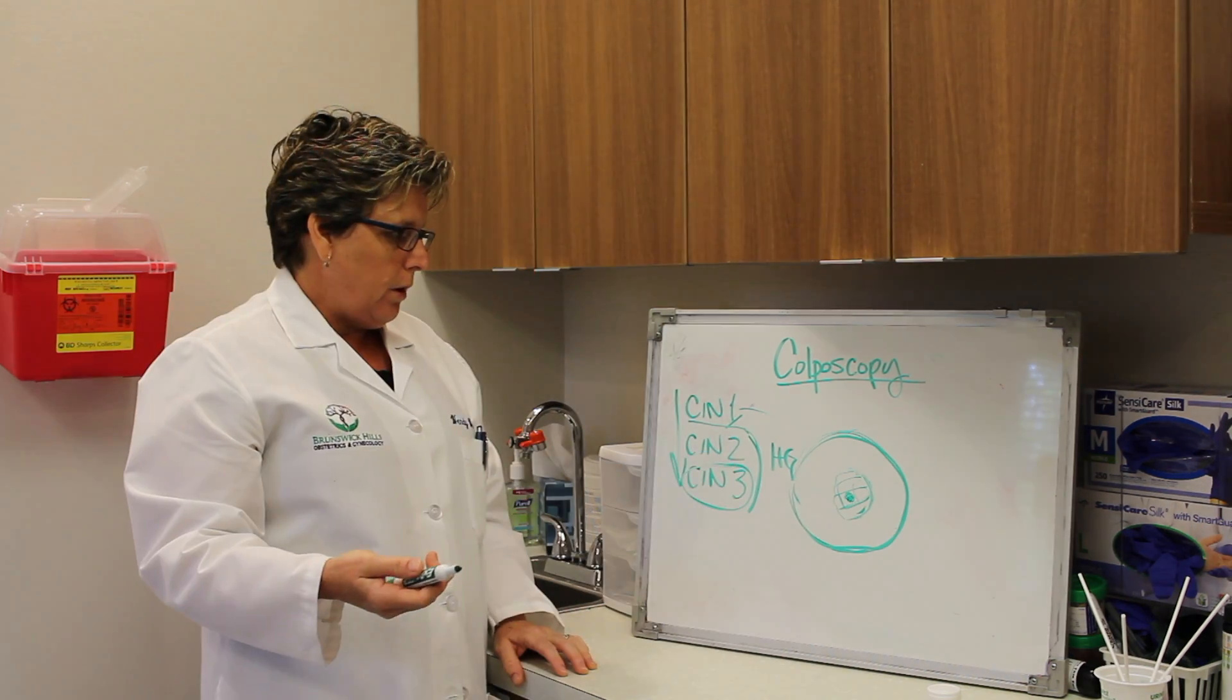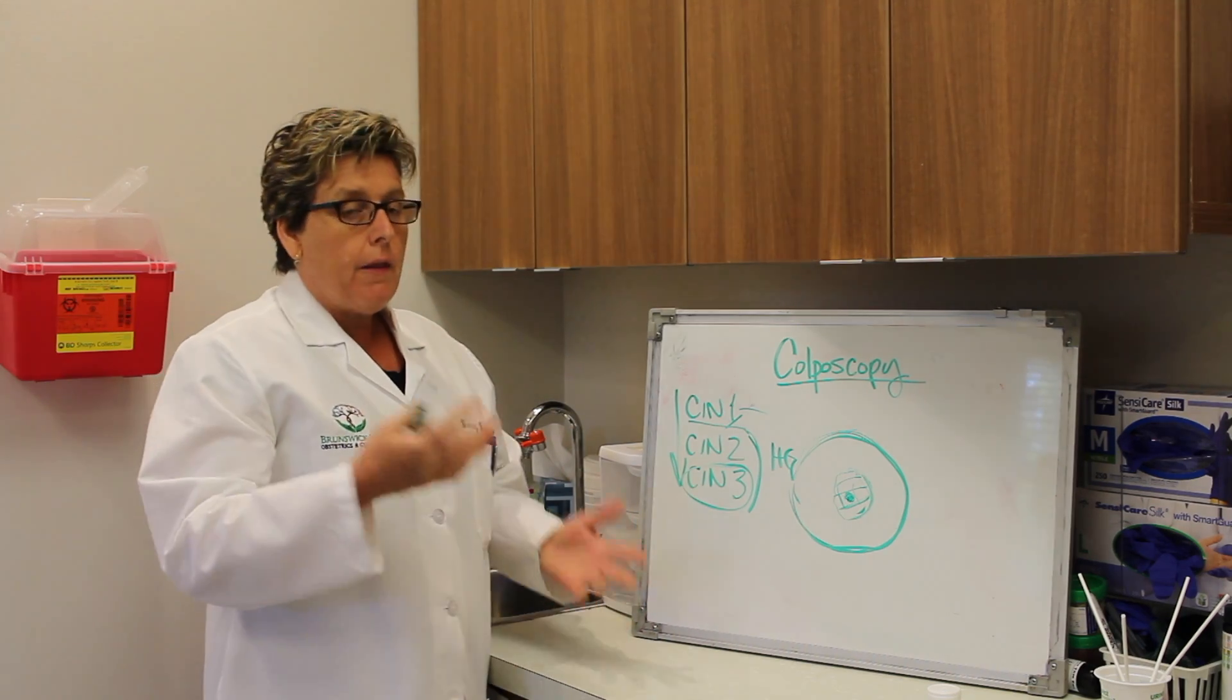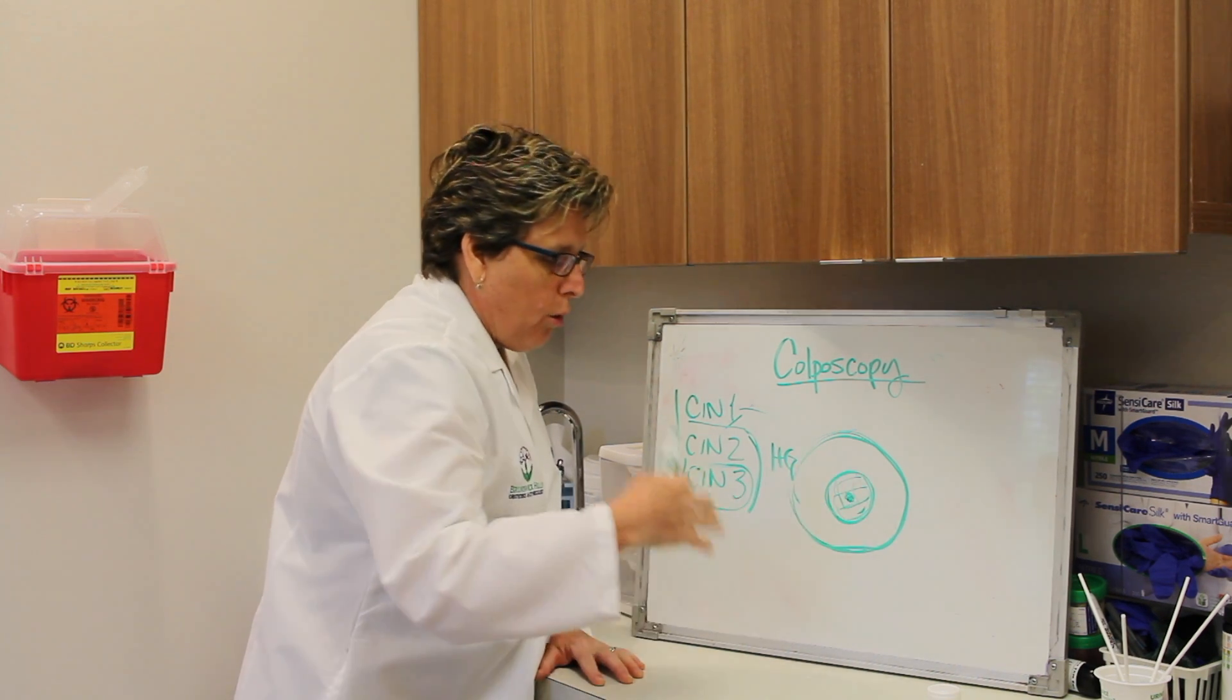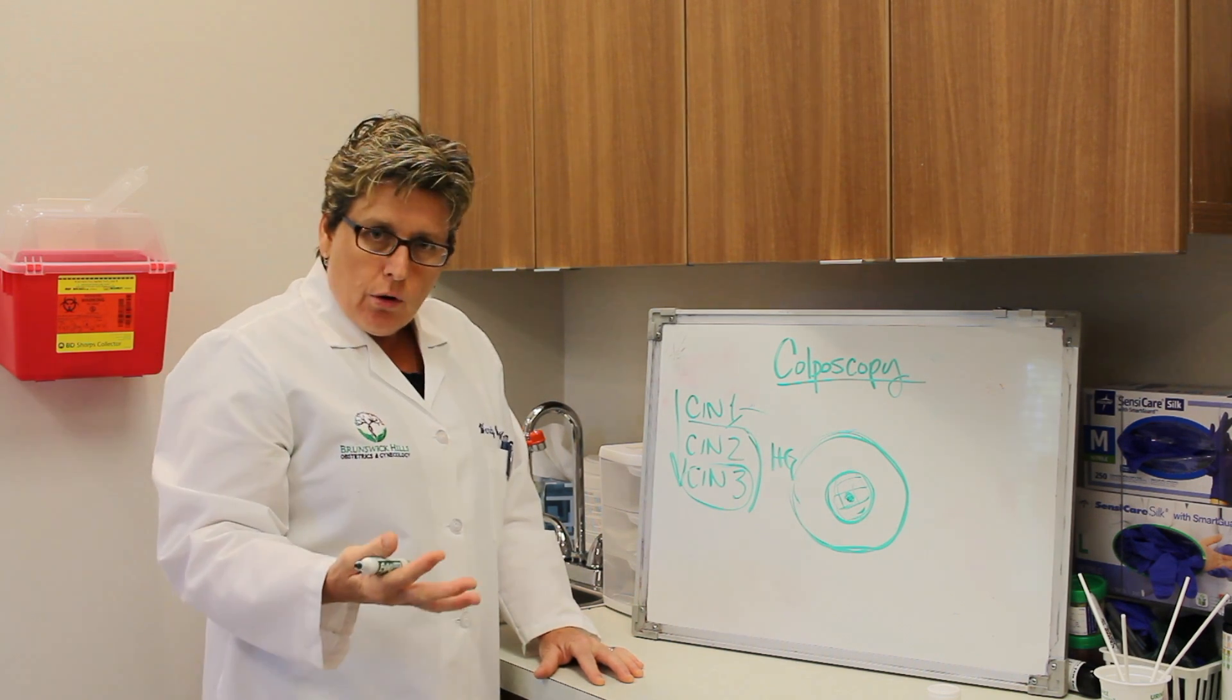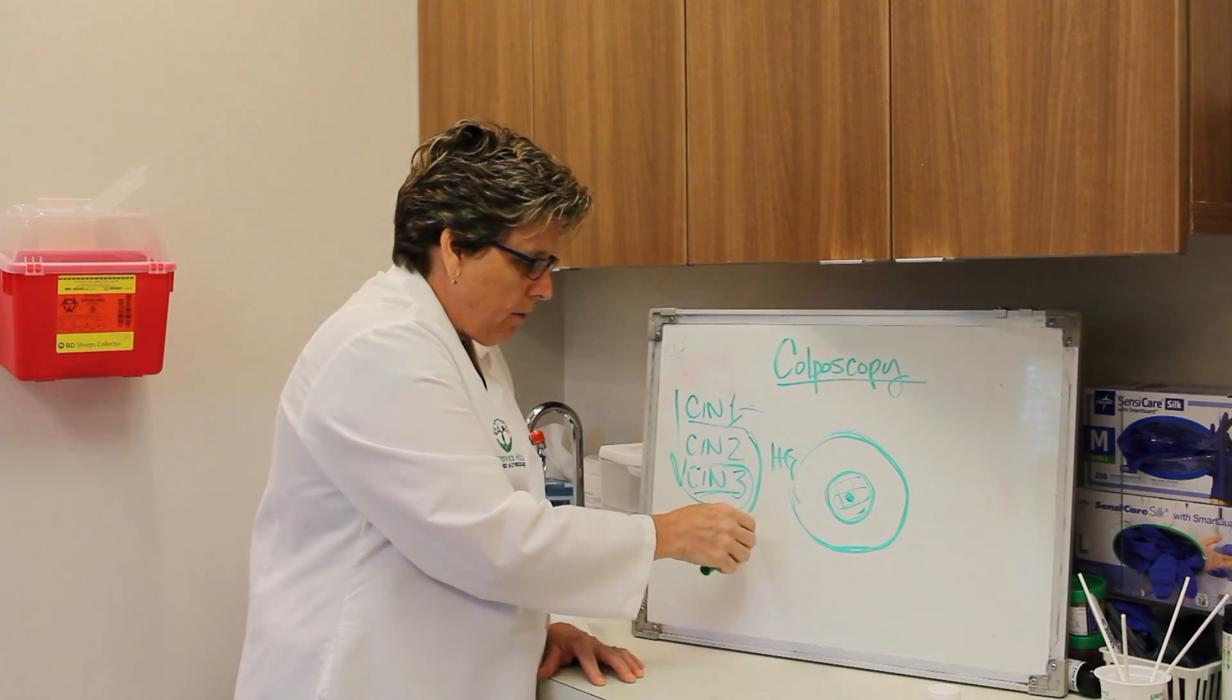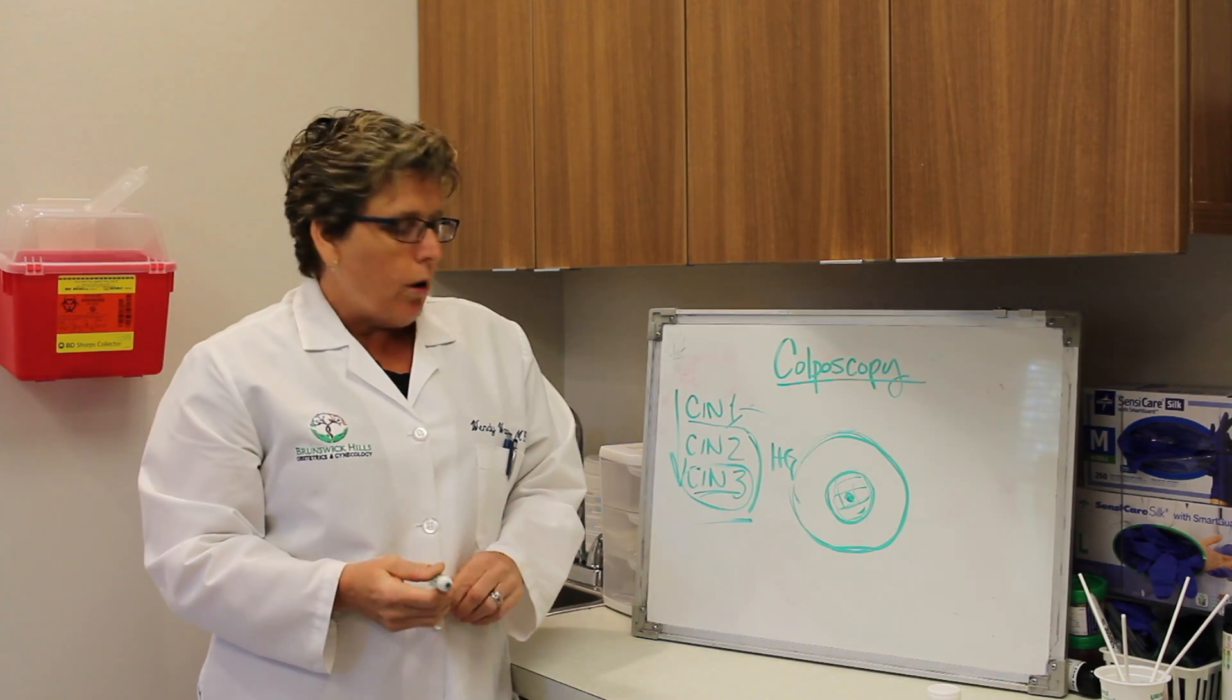CIN3, we usually do a surgery like the LEEP, which we'll talk about in the next video, to basically remove the transformation zone and hopefully remove any abnormal cells so that the rest of the tissue can grow back normally. This is the most concerning. You can also get a pre-invasive cancer on these biopsies, but that's more unusual, certainly.